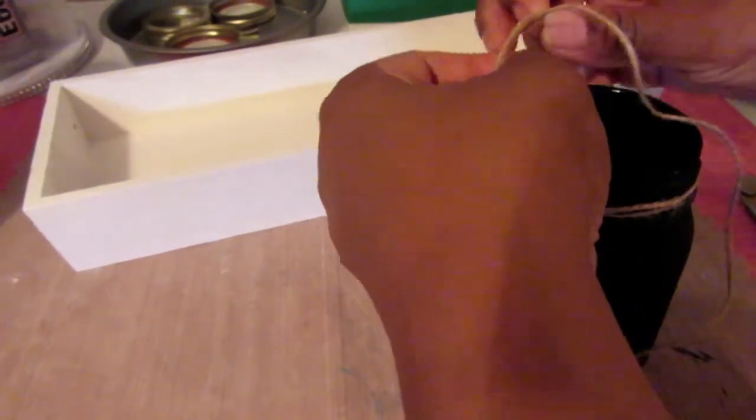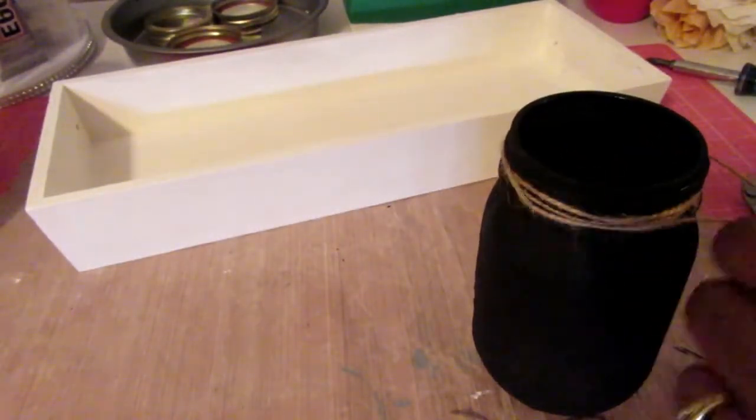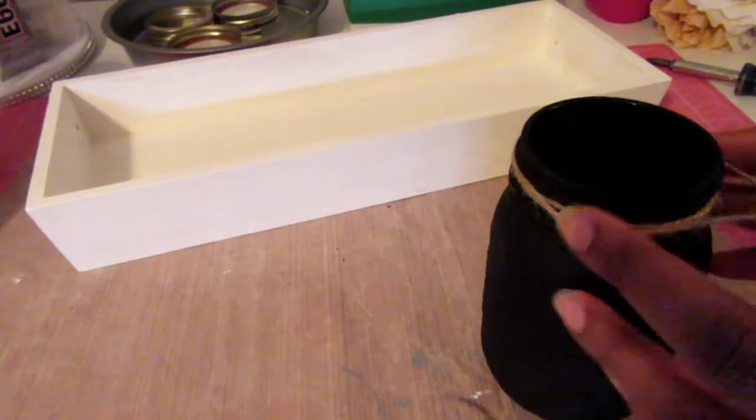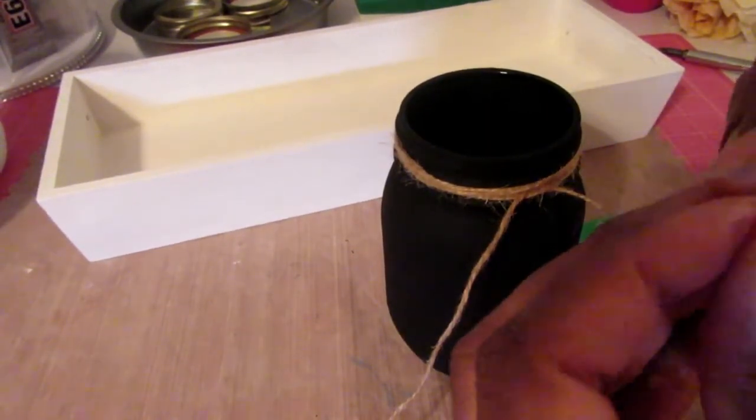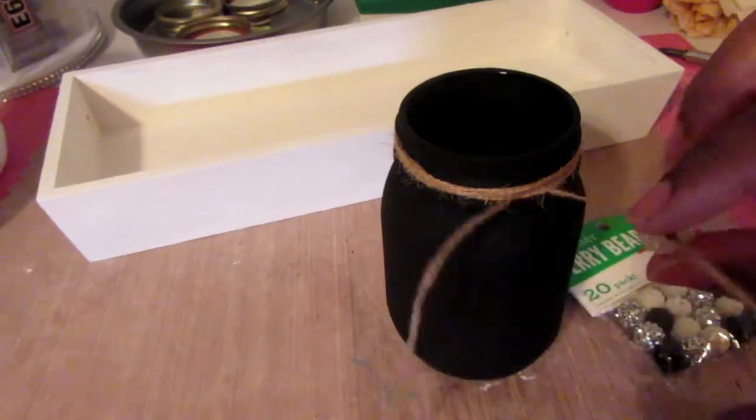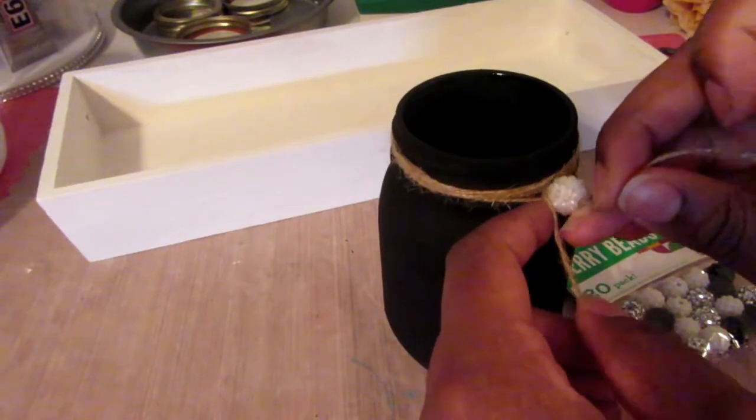Then I'm going to add some twine around the rim just to give it a rustic look. But I'm also going to add one of these little beads on the top to give it some sort of glam appearance since I always have to have a little bit of bling to my projects.